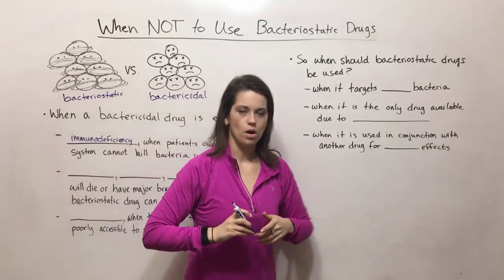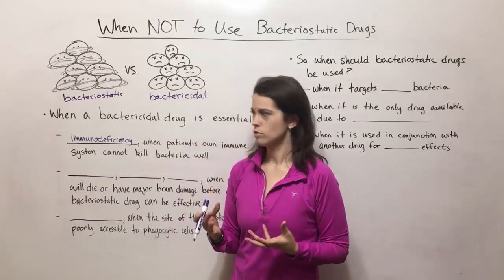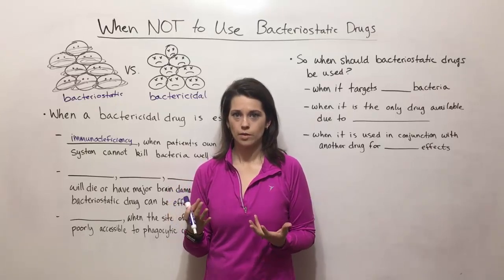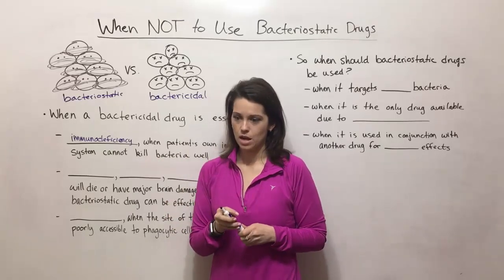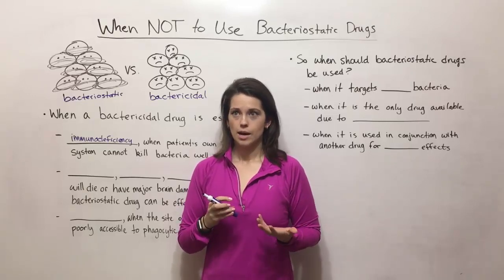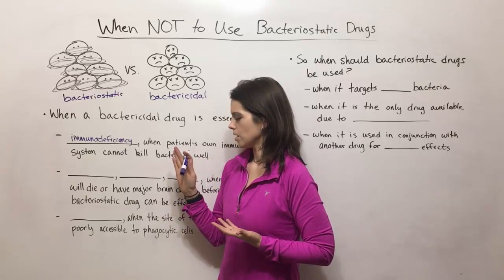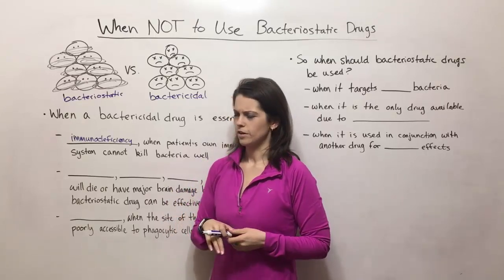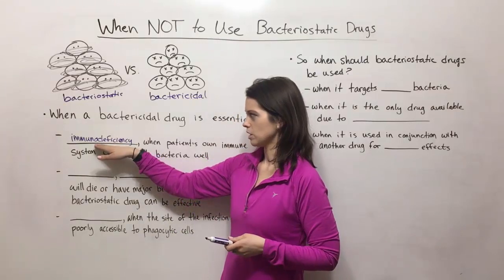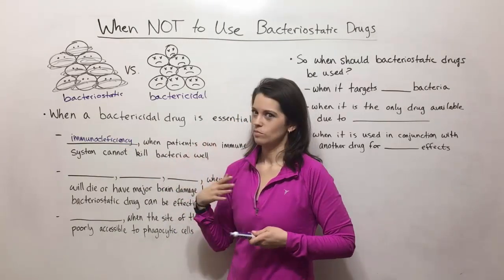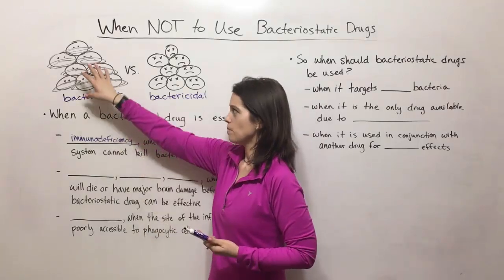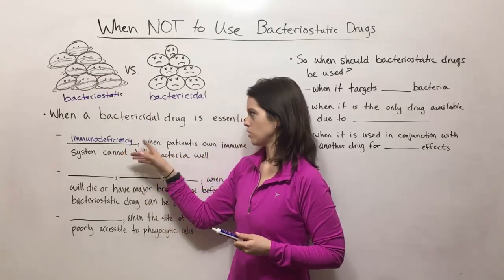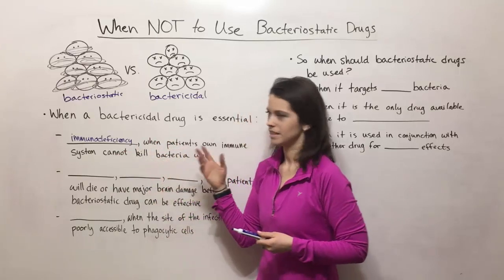Think about people who are HIV positive with a suppressed immune system, people undergoing radiation treatments and chemotherapy for cancer that have had their immune system weakened, the elderly, the very young, or people with some kind of immune system disease like severe combined immunodeficiency syndrome. These are all examples of immunodeficiency where a bacteriostatic drug that just prevents multiplication and waits for the immune system to kick in is not going to help. A bactericidal drug is critical in that case.